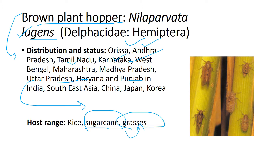BPH can also attack grasses in some rare cases. It is also present in Southeast Asia such as China, Japan, and Korea. It is a main pest affecting all the major rice producing areas of Asia — India, China, Japan, and Korea.